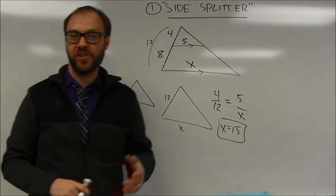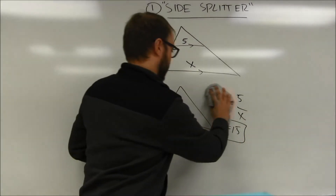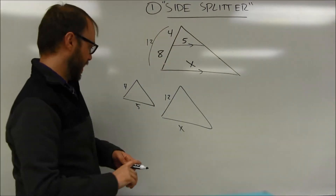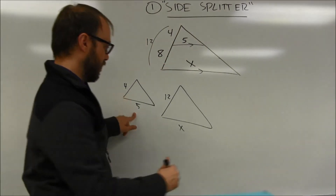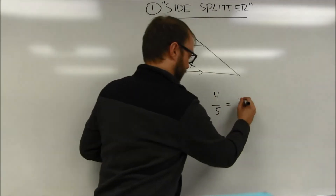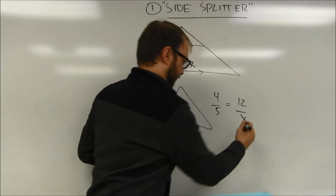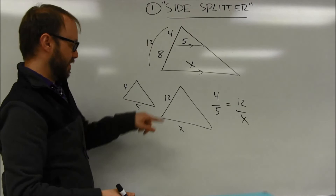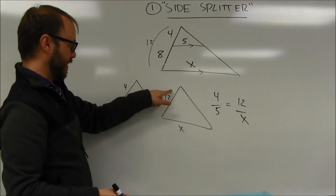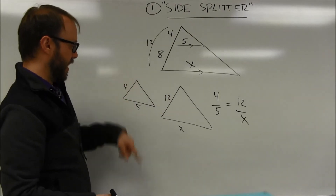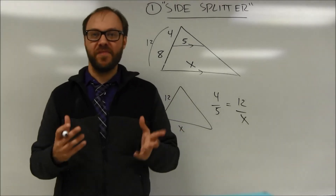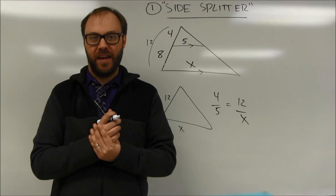There are lots of other proportions you could also do here. You could compare corresponding parts within the two triangles — left over base equals left over base, or base over left equals base over left, or a big triangle part over a small triangle part. There are many different possible proportions that can be created.